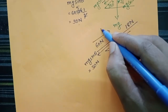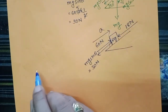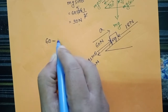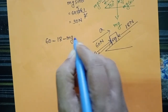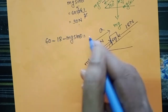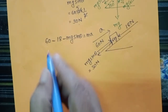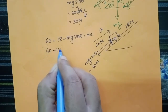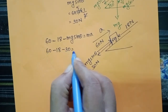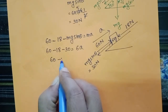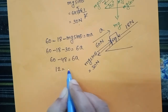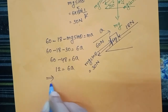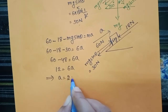The resultant acceleration of the block is acting in the upward direction. Applying Newton's second law: 60 minus 18 minus mg sinθ equals ma. So 60 minus 18 minus 30 equals 6a. That gives 60 minus 48 equals 6a, so 12 equals 6a. Therefore, acceleration equals 2 meters per second squared.